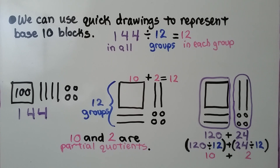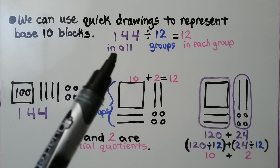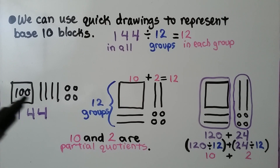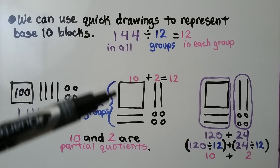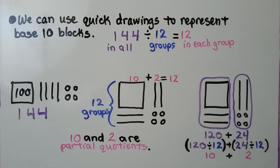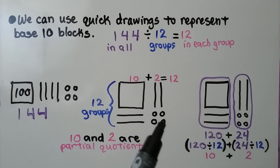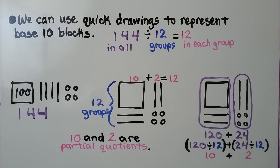We can use quick drawings to represent base 10 blocks. We have 144 divided by 12 — that means we have 144 in all that we're dividing equally into 12 groups. We make a square for 100, draw lines for tens, and draw little circles for ones. We have 12 groups, and because 100 is 10 groups of 10, we count 10, 11, 12. We can put another 10 here with 2 more, and another 10 here with 2 more. That puts 12 in each of the 12 groups.